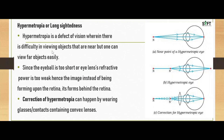The second defect is hypermetropia, or long-sightedness. Hypermetropia is a defect of vision wherein there is difficulty viewing objects that are near, but one can view far objects easily — just the opposite of myopia. Since the eyeball is too short or the eye lens's refractive power is too weak, the image instead of forming upon the retina forms behind the retina. As shown in the image, the image is formed behind the retina, which is why we are unable to see near objects.